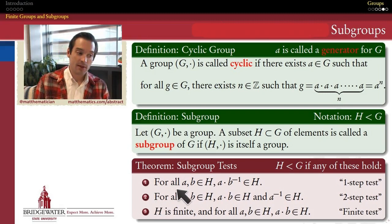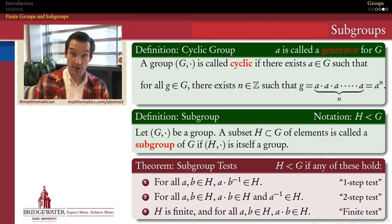So the one-step test says that a subset H is actually a subgroup inside of G if it's true that for all a and b in my set H, the product a times the inverse of b belongs to H. This is a bit like saying when our group was the group of integers under addition, then if I have a subset of integers, that subset will be a subgroup if it's closed. So this is very much like a closure property.